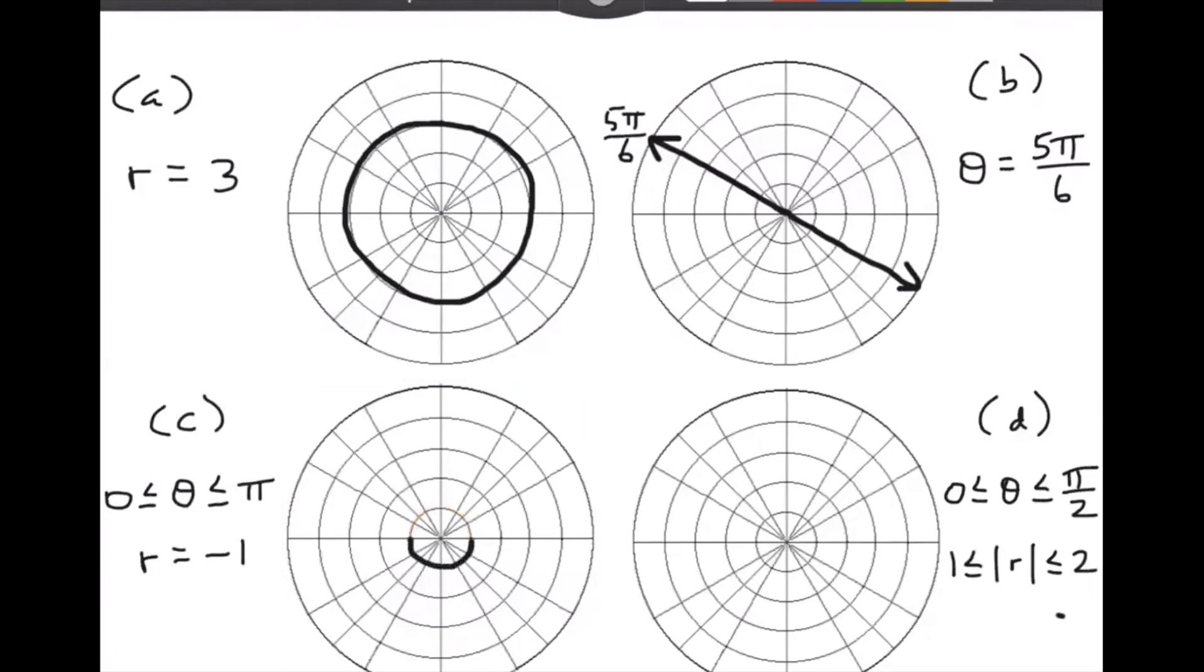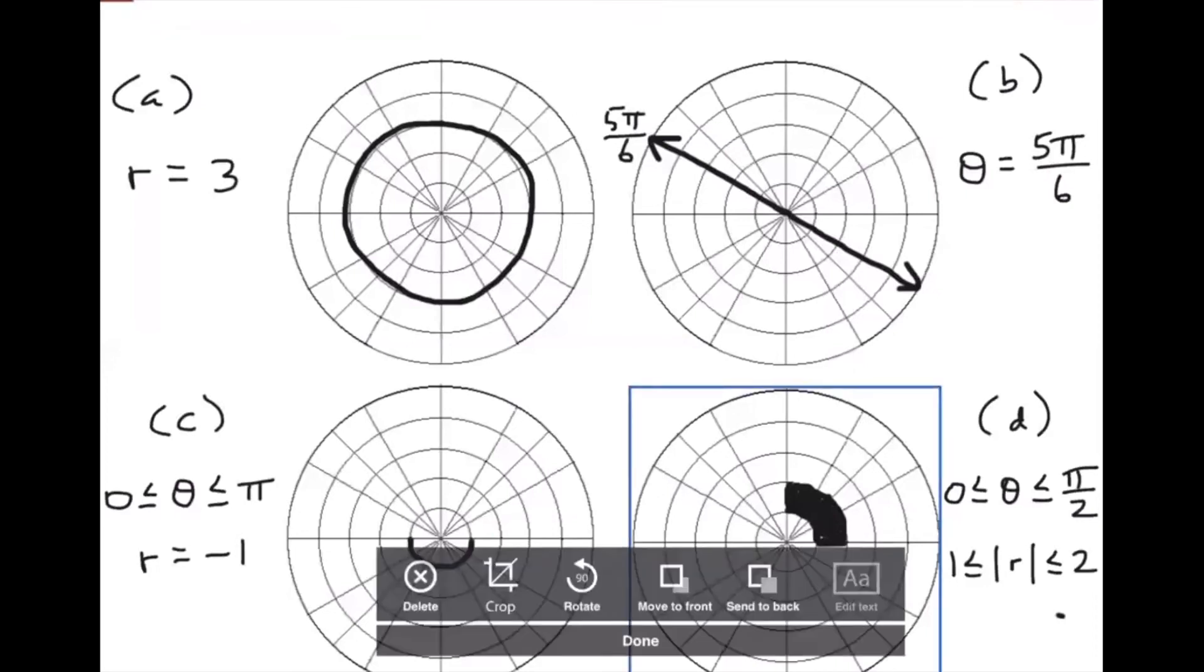And then finally, we have theta is between zero and pi over two. And the absolute value of R is between one and two. So let's ignore the absolute value for a second and just pretend it said R is between one and two. Theta is between zero and pi over two. That would be this region right here. That's if R is between one and two.